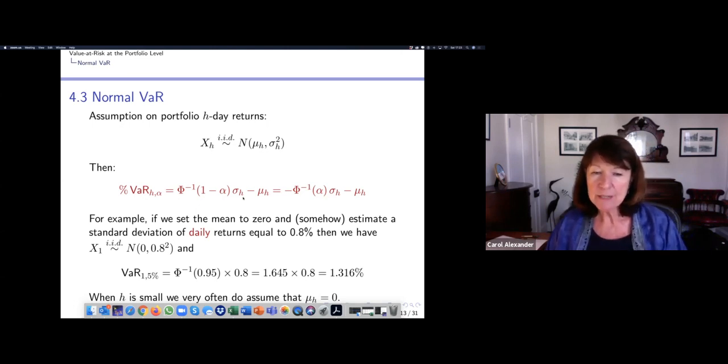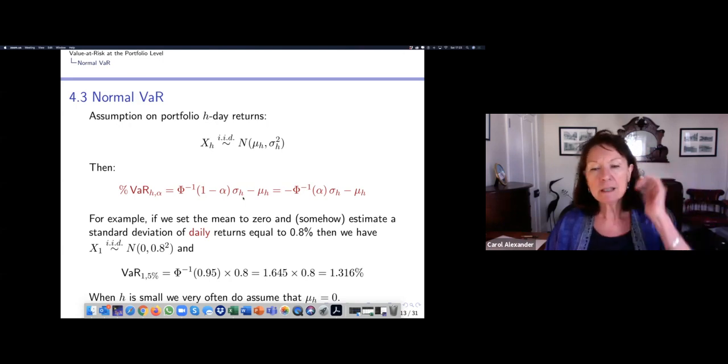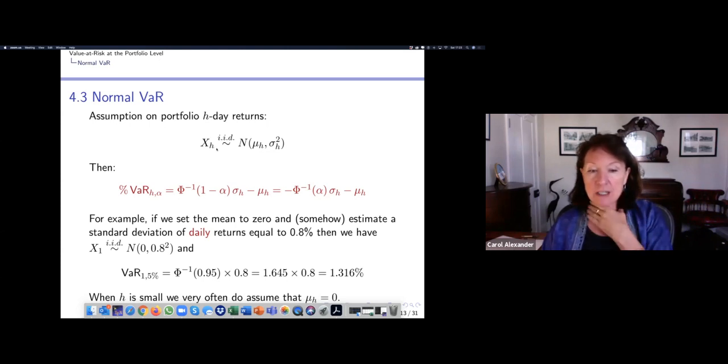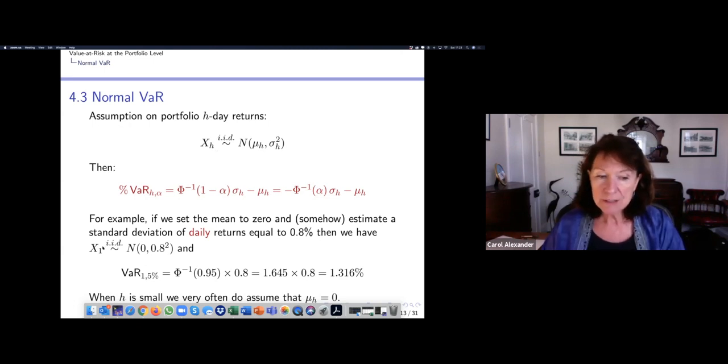Here's an example. Suppose we set the mean to zero. We often do that. I'll explain why in a minute. And somehow estimate a standard deviation of daily return, so H is one day. The standard deviation of daily returns is 0.8%. Our assumption is that X_1 is IID normal zero, 0.8 squared. Then our VaR with the parameters 1 and 5% is going to be phi to the minus one of 0.95, in other words 1.645 times the sigma. Sigma_H is a standard deviation of 0.8%, and we've assumed the mean is zero. So 1.645 times 0.8 is 1.316%.